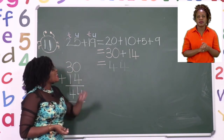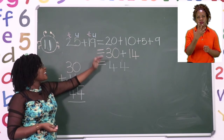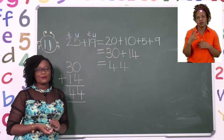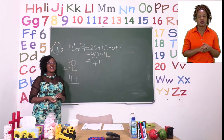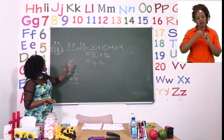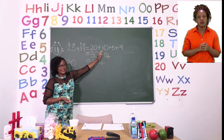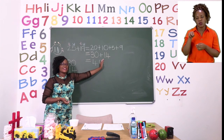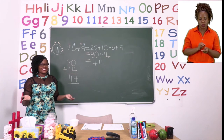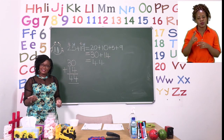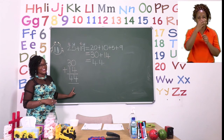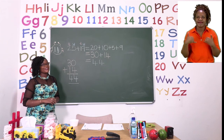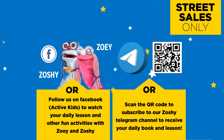This also means that 25 plus 19 equals 44. So remember, boys and girls, when you are adding, make sure that first things first is to put the numbers in their place value. Then after that, you are going to add the place values together. Then you will add the numbers you have as your result, and then you will get your answer. Please take your time, use counters, or your number line, or you can use this method of adding for your final answer. Take your time, have so much fun, and I will see you after the advert break. Follow us on MyZone Facebook, Active Kids, to watch your daily lesson and other fun activities with Zoe and Zoshi.